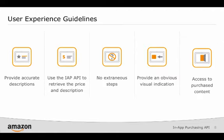Some important user experience guidelines you should remember when developing your app: Provide an accurate description and use the appropriate in-app item type. Use the IAP API to retrieve price and product information for display, as it will allow you to manage the price and metadata for your in-app item on the Amazon Developer Portal without having to make changes to your code. Do not include extraneous steps or confirmations before, during, or after the purchase experience. If a new account is required to access purchased content, the account must be created before the purchase is initiated. Always provide an obvious visual indication that the in-app content is available after purchase, but do not attempt to message any transaction status to the customer. Never prevent a customer from accessing content previously purchased.